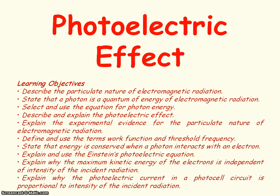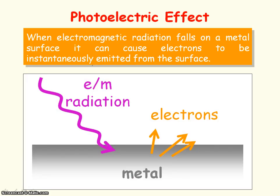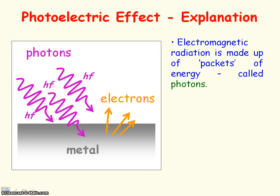We're going to be looking at the photoelectric effect, which provided evidence for the particle nature of electromagnetic radiation. The photoelectric effect is when electromagnetic radiation falls on a metal surface, then the electrons at the surface are instantaneously emitted. And that's because rather than the electromagnetic radiation being a continuous source of energy, it's actually made up of packets of energy, or quanta of energy, which are called photons.